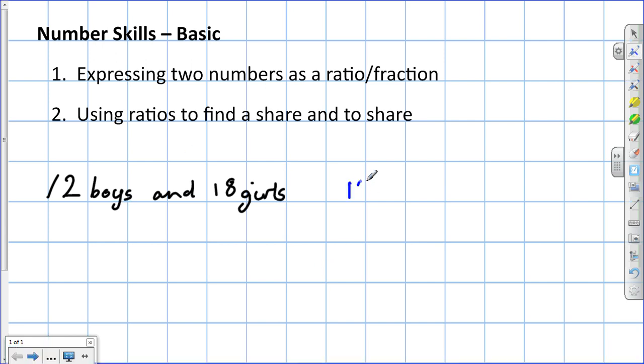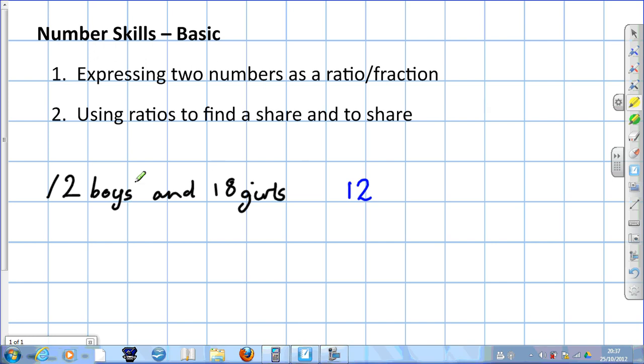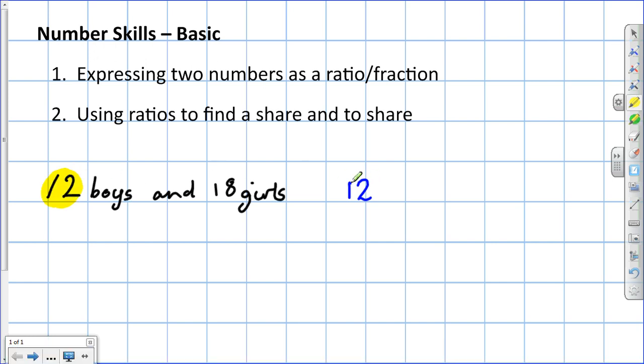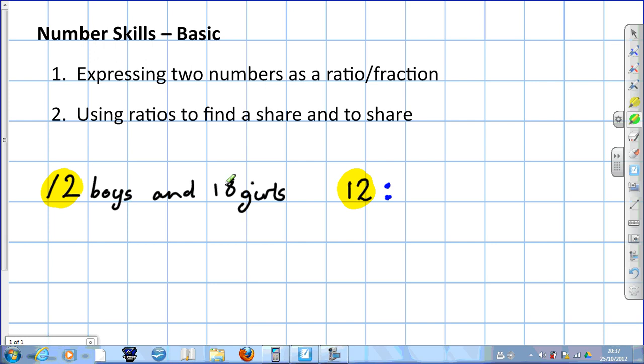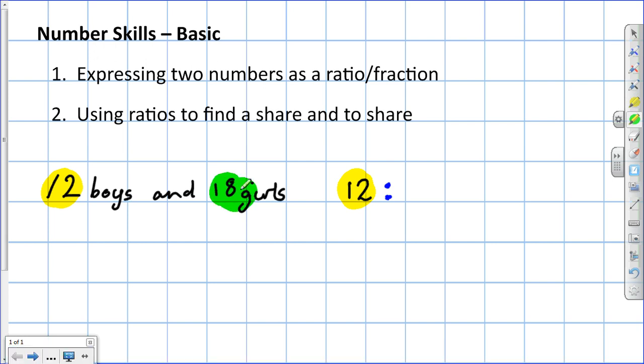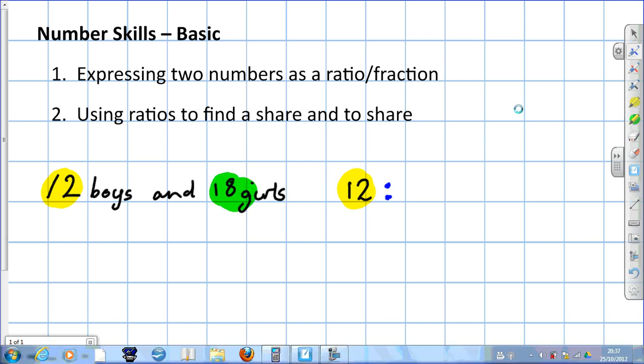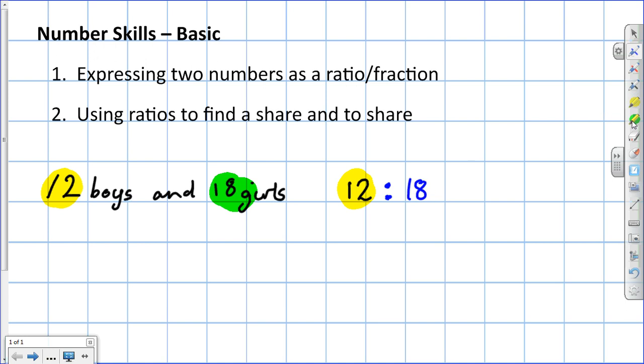This is what we write. The first number, the number of boys, 12 is our first number. And then to show it's a ratio, we put two dots, one above each other. It's called a colon. And the second number is the number of girls, 18. So the ratio of boys to girls is 12 to 18.